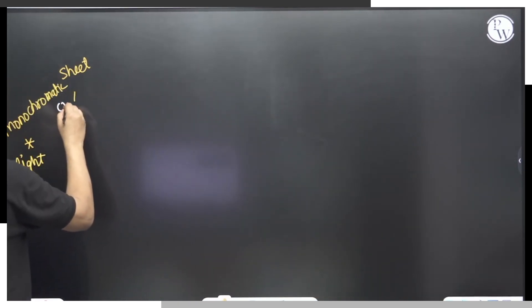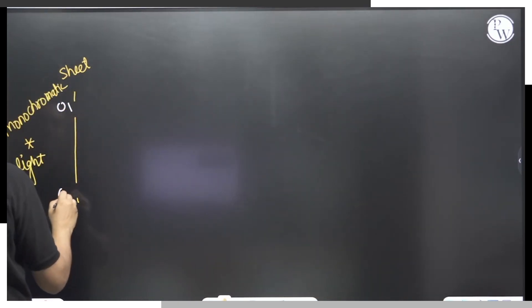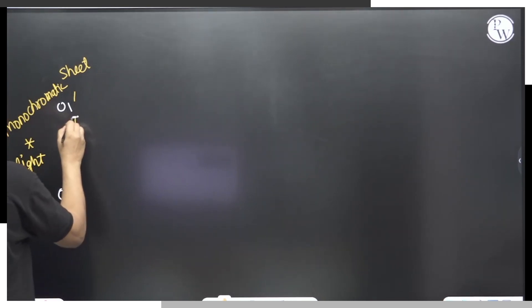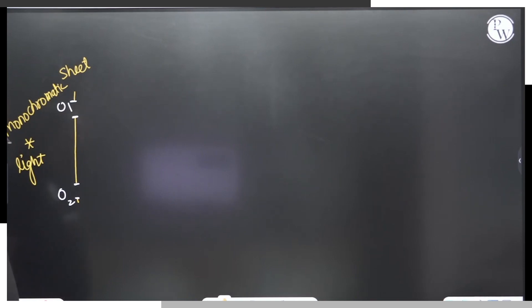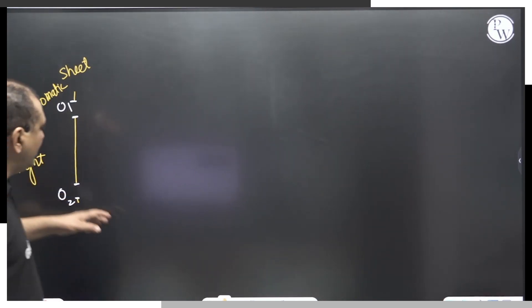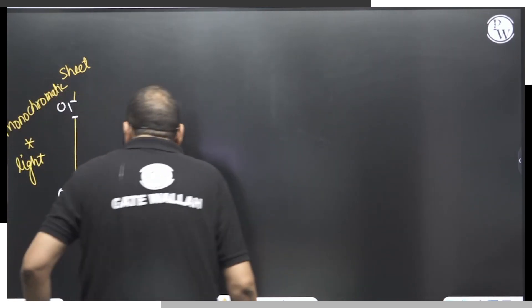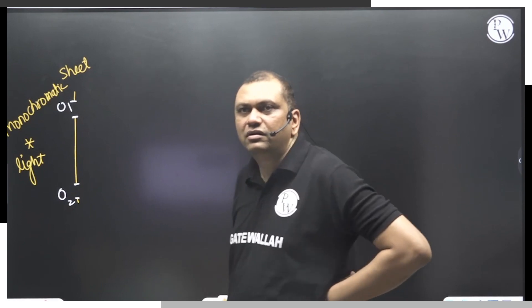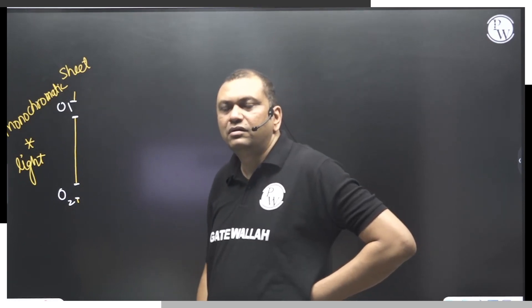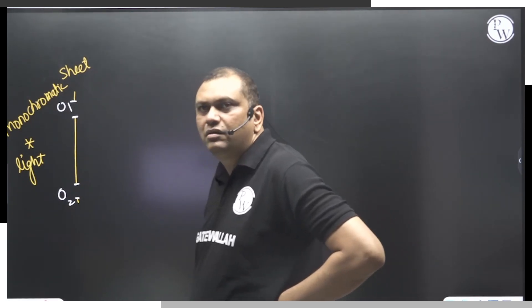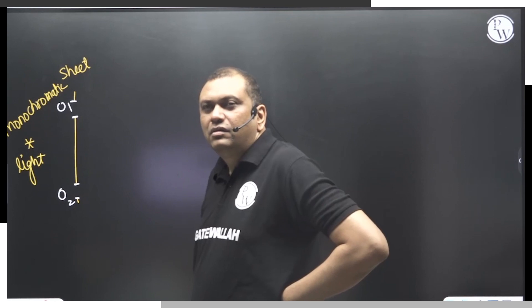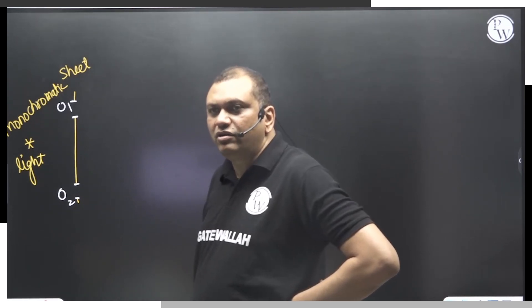There are two holes in the sheet — let us say O1 and O2. Light waves will come out of those holes.